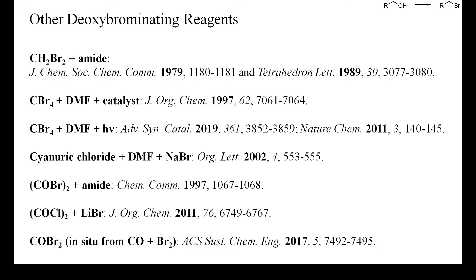Here are some references describing the generation and use of iminium bromides as deoxybrominating reagents. Amides do react with methylene bromide or carbon tetrabromide thermally, photolytically or in the presence of some transition metal catalysts. The resulting O-alkylated amides can activate alcohols and bring about their conversion into alkyl bromides.